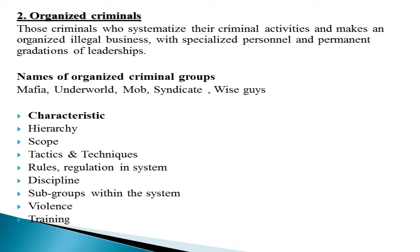Examples of organized criminals include organized beggary — their massive network is not limited to one area but spans multiple cities, provinces, and sometimes even operates transnationally beyond borders. Prostitution networks are also organized criminal operations. These organized criminal groups are called by names such as mafia, underworld, mob, syndicate, and wise guys.